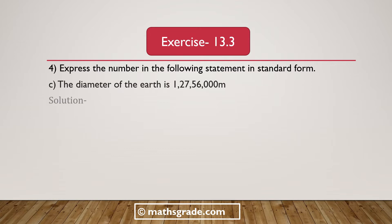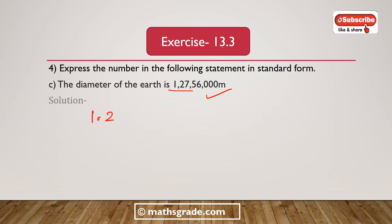Now solve question number 4, part C. The diameter of the Earth is 1,27,56,000 meters. The diameter of the Earth — if we place the decimal point after the digit 1, it will be 1.2756 multiplied with 10 to the power 7. This is in standard form.